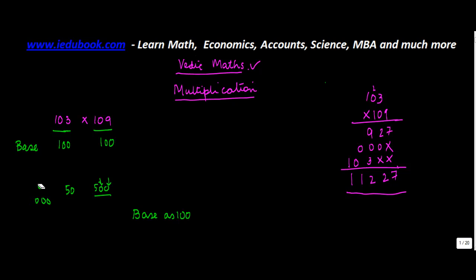Once you've selected the base, then you subtract this base from both these numbers. So 103 minus 100 will give you 3, and 109 minus 100 will give you 9, and you call these numbers the surplus. So you've got the base which is 100 and you've got the surplus which is 3 and 9 for these respective numbers.